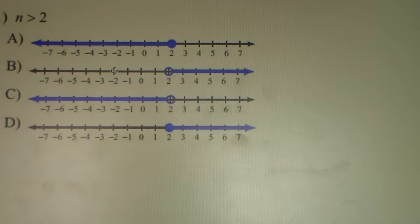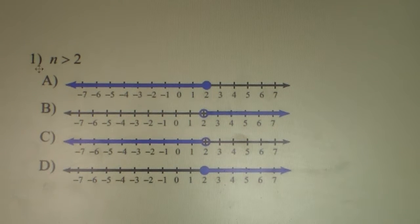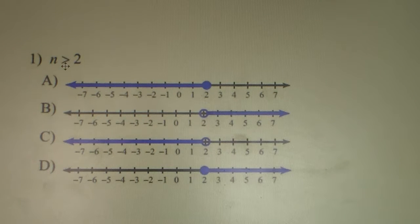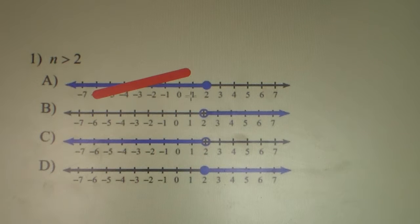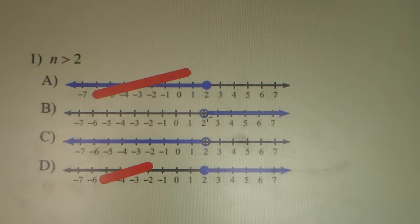Here's problem number one of the review packet. N is greater than 2. We practiced some of these inequalities in class. First thing you should notice is looking at this inequality — is this supposed to be an open circle or a closed circle? Anytime this inequality does not have a line underneath, it's going to be an open circle. So we already know that A and D are incorrect because they have two closed circles. So it's either B or C because they have an open circle, and we know it's at 2.